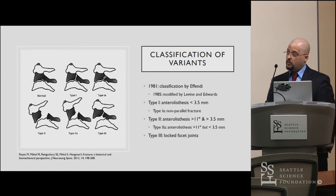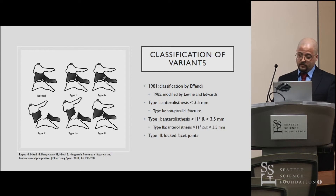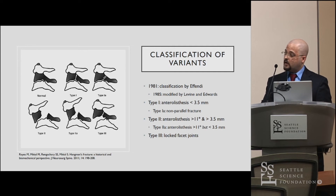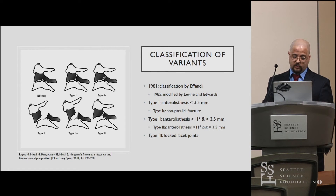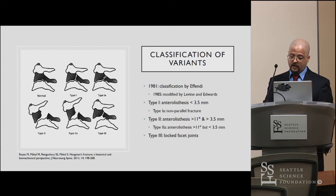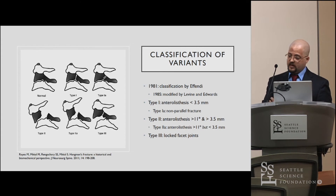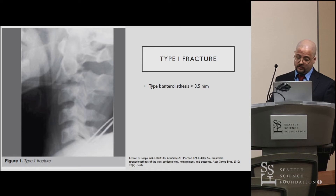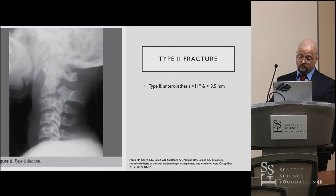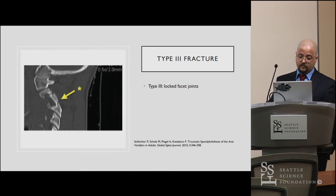As far as classification goes, this started in 1981 with Effendi's paper, modified in 1985. Type 1 has slippage of less than 3.5 millimeters; Type 1a is a slight variant without parallel symmetric bilateral breaking. Type 2 has more than 11 degrees of angulation and typically greater slippage, with a Type 2a variant showing less slippage. Type 3 refers to any injury where there is a locked facet joint in place.